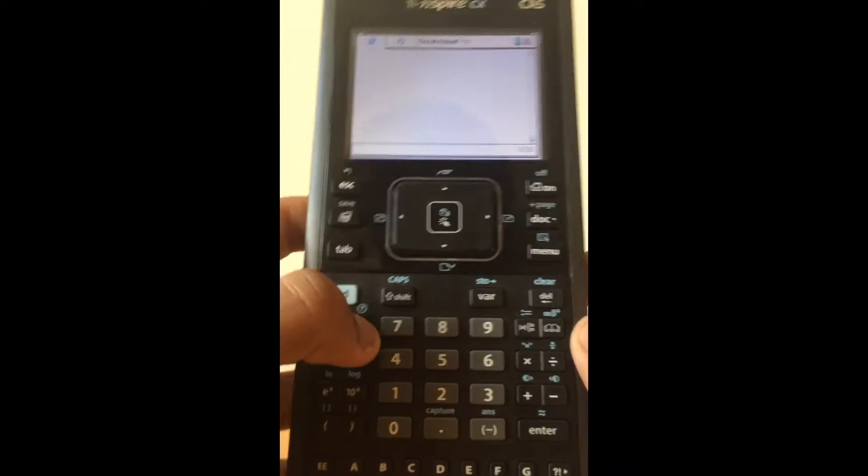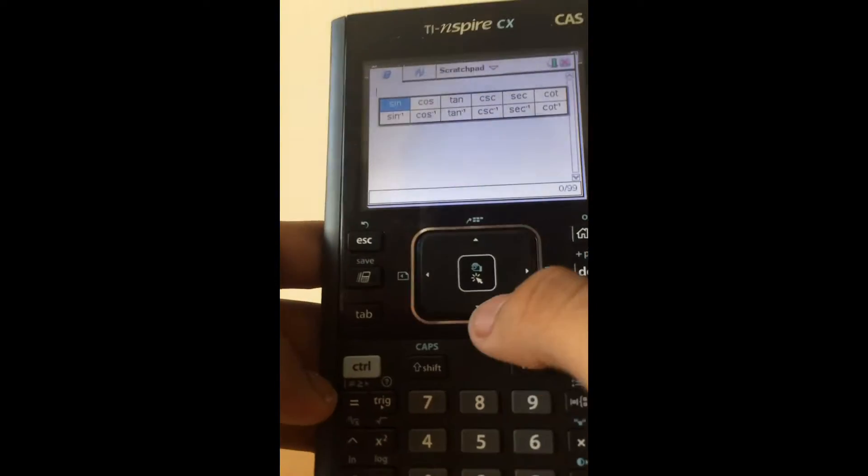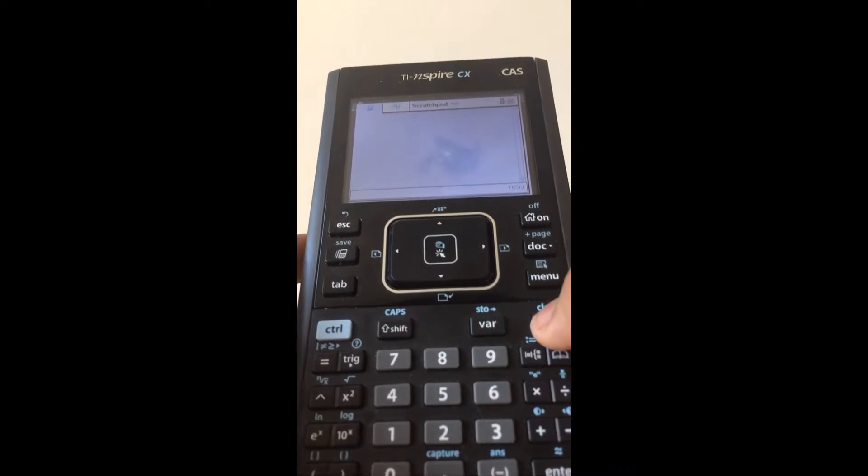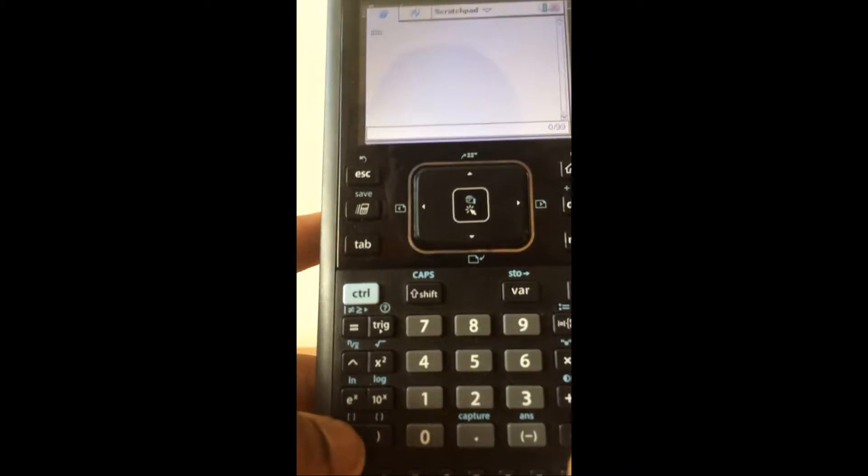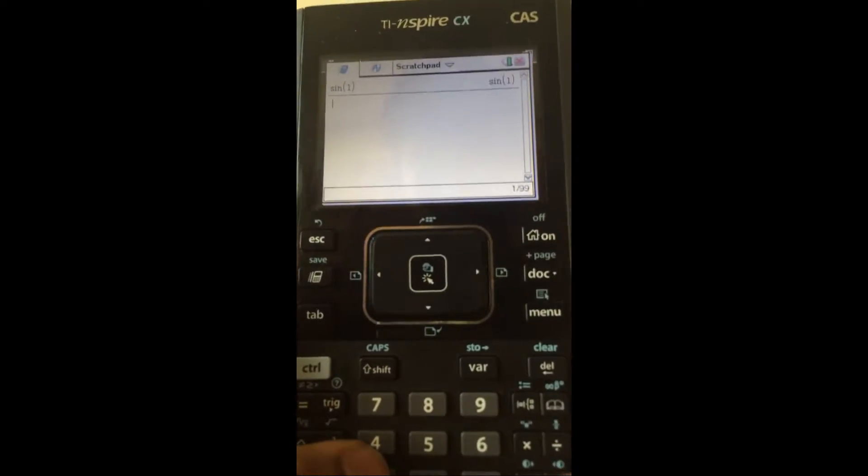To do trigonometric ratios, press the trig option over here. It opens all the trigonometric ratios you want to use and then just scroll over to which one you want and press enter. Alternatively, you can just type them using the keypad. Just type it like, for example, sin. Make sure to use brackets and then put the number in here. Remember that it's in radians.